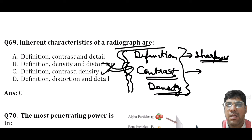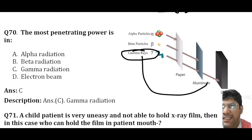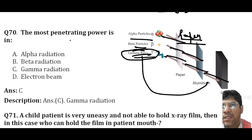The most penetrating power is found in gamma rays. Gamma rays can penetrate paper, aluminum, and lead, whereas beta particles penetrate only paper and aluminum, and alpha particles penetrate only paper. So the most penetrating of the three is gamma rays.